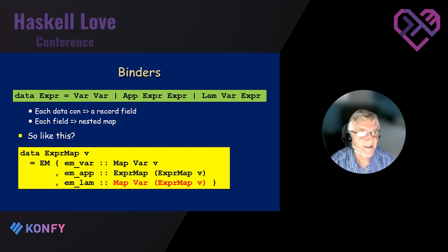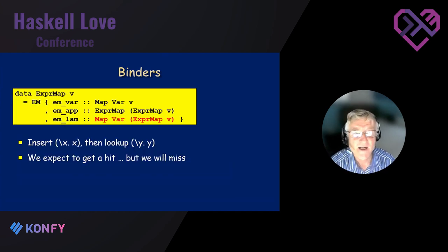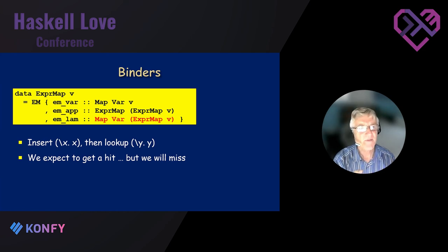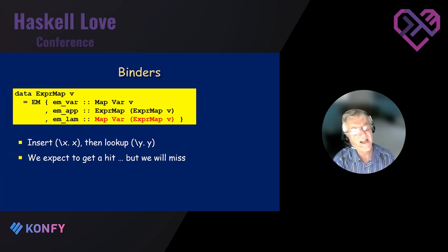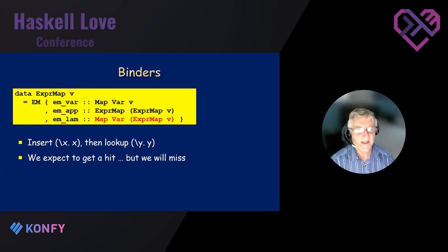What if we add lambdas? Lambda has two arguments — a var and an expr — so we'd have a Map from Var to a nested ExprMap. But that doesn't work! If I insert lambda x.x and look up lambda y.y, I hope to get a hit — those are the same lambda term. But with a mapping from variable strings to ExprMaps, inserting under 'x' and looking up under 'y' gives nothing. We need to look up modulo alpha equivalence.